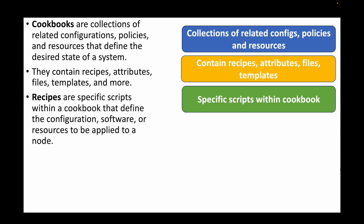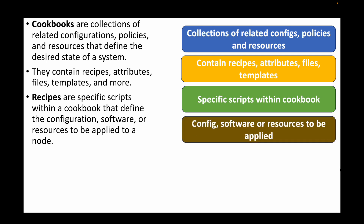Recipes, on the other hand, are the individual scripts within your cookbook. A cookbook can contain multiple recipes, whereas a recipe is one particular script — one instruction. Recipes help you define the configuration, software, or resources that need to be applied to a node. For example: installing a package is one recipe, copying a file is one recipe, working with a service is another recipe.